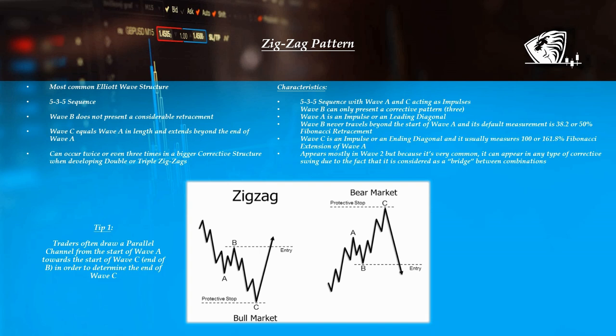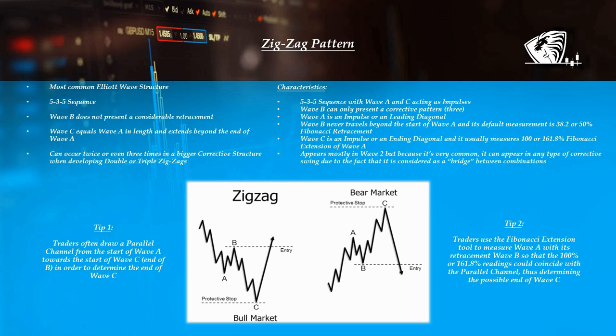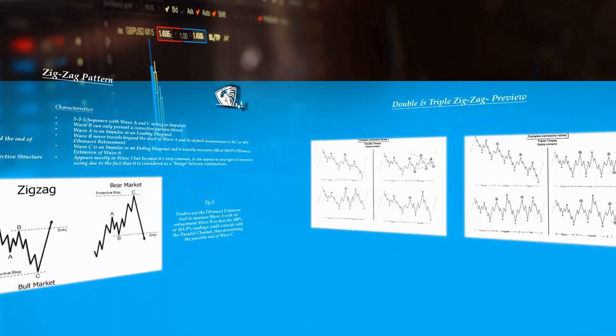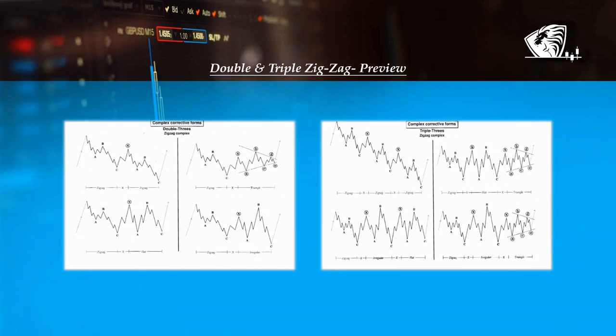Traders often draw a parallel channel from the start of wave A towards the end of wave B, in order to determine the end of wave C. In these images, you may find some examples on how a zigzag can act as a bridge and change a structure from simple towards a complex one.